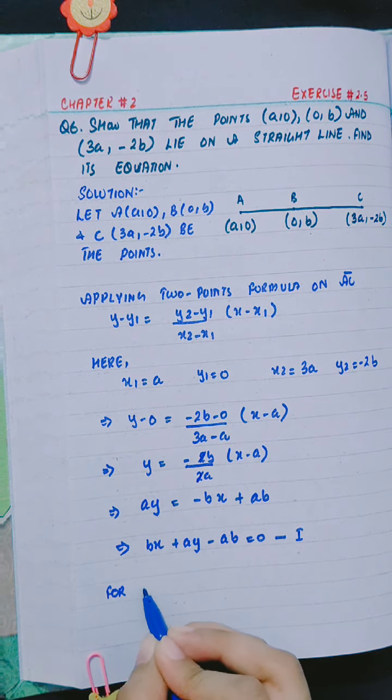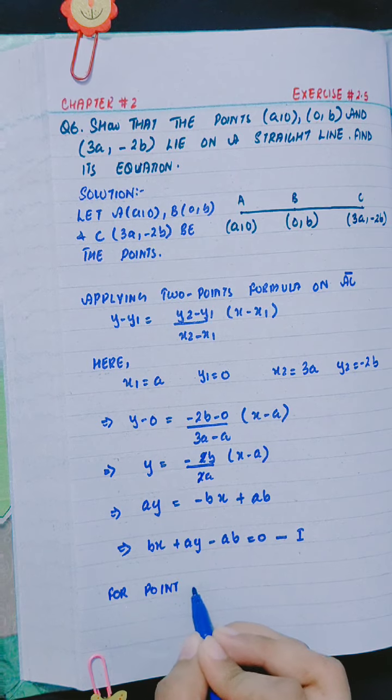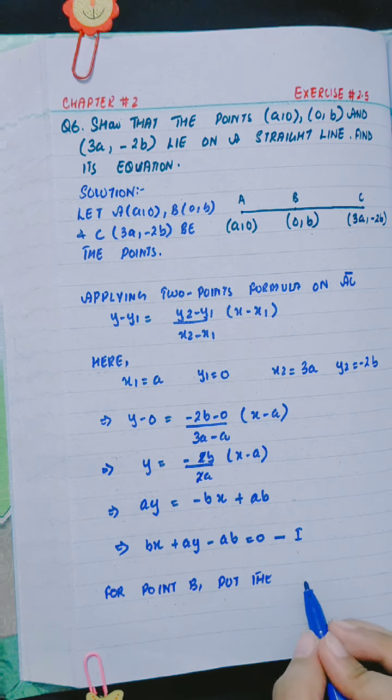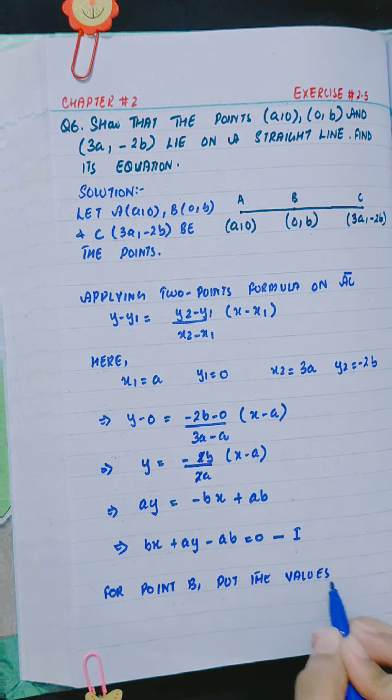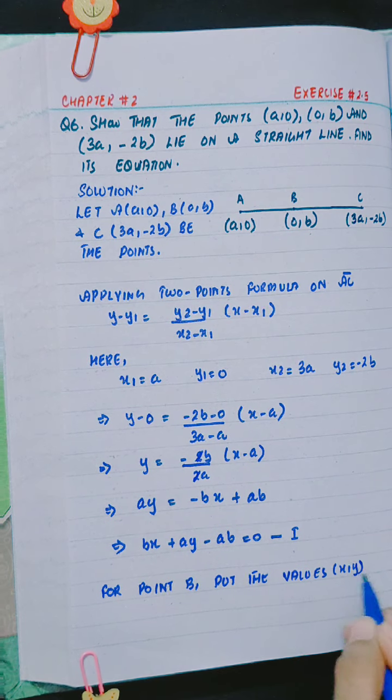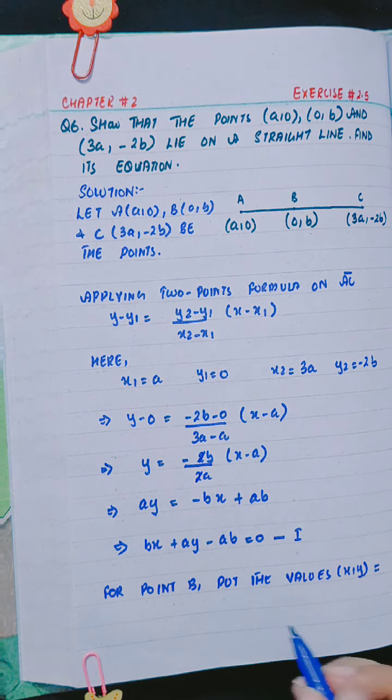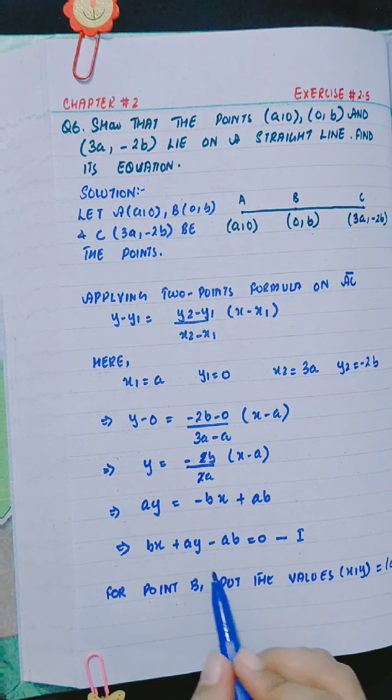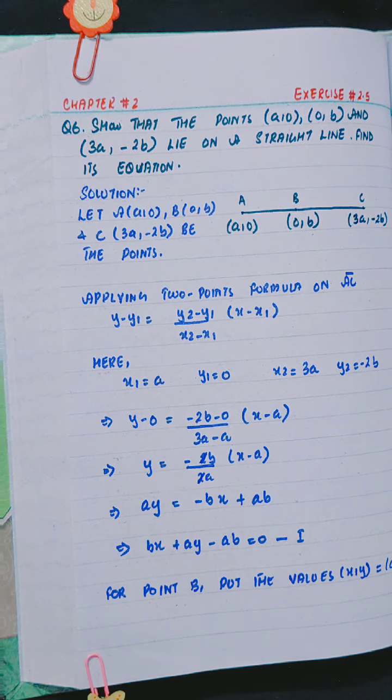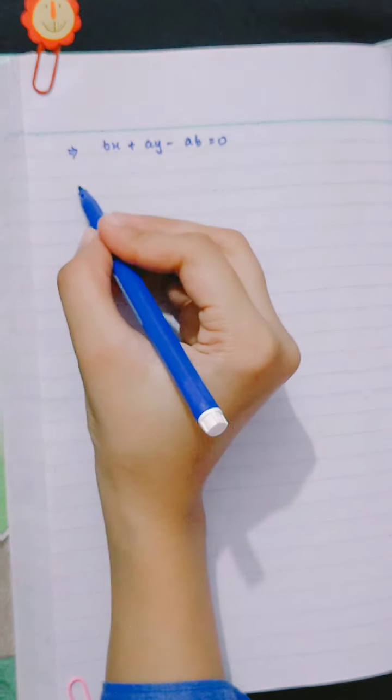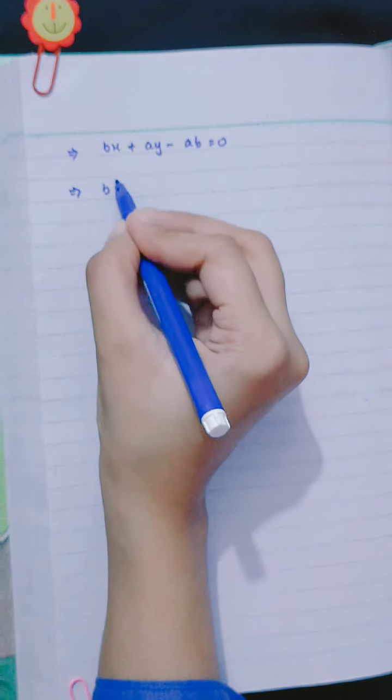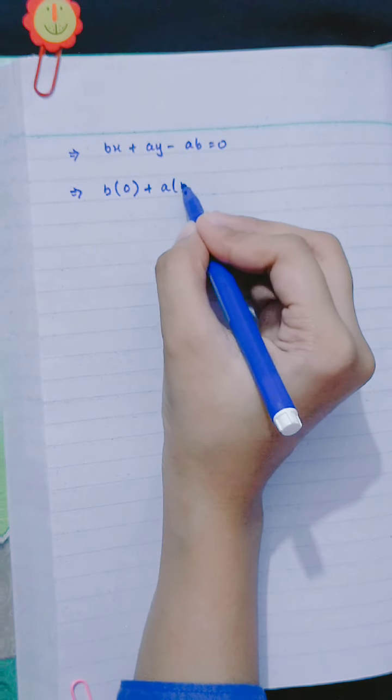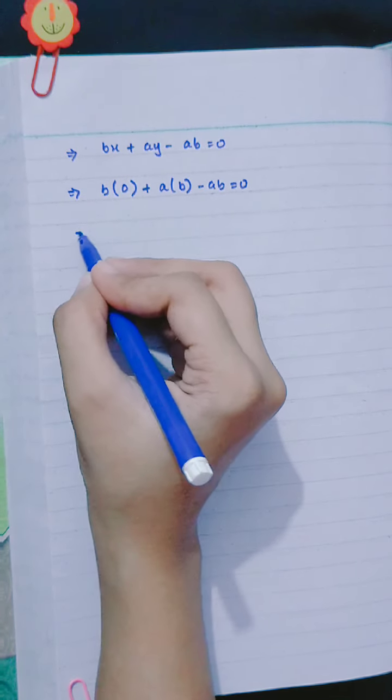Now, for point B, put the values x,y equals to 0,b. Is equation ke andar hum x,y ki jagah put kar denge 0,b. x ki value is 0, so we get 0 plus ay is b minus ab equals to 0.